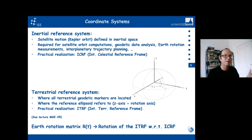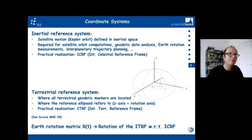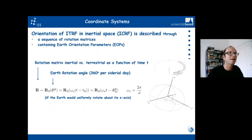The terrestrial reference frame is the system where the ellipsoid of revolution is defined within. The practical realization is the International Terrestrial Reference Frame. Of course, we need to describe the rotation of the ITRF with respect to the ICRF — this is the Earth rotation matrix — and we will hear about that also in other lectures.